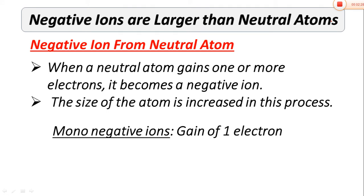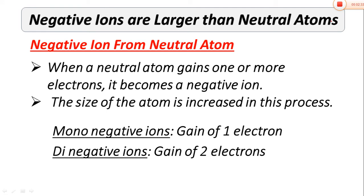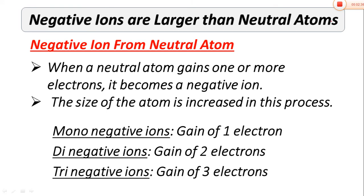There are three types of negative ions: mono negative ions, di-negative ions, and tri-negative ions. Mono negative ions have a minus one charge, and they form from neutral atoms when there is a gain of one electron. In the periodic table, the 7A group has seven electrons in the outermost shell, so they require only one electron. Therefore, one electron is gained in their outermost shell. This group is called halogens, and they develop a minus one charge.